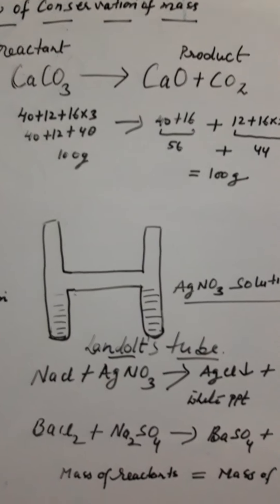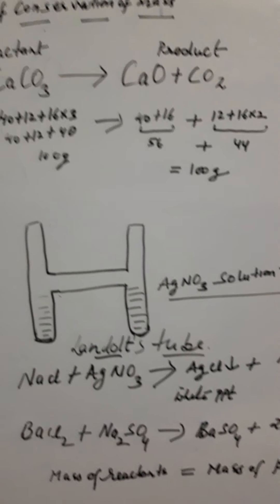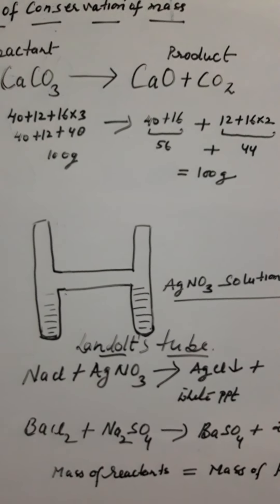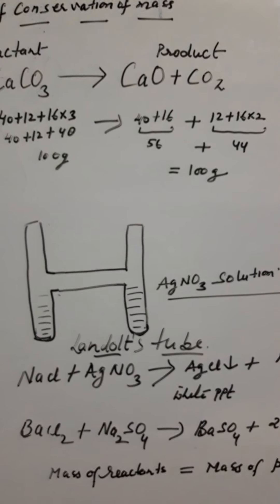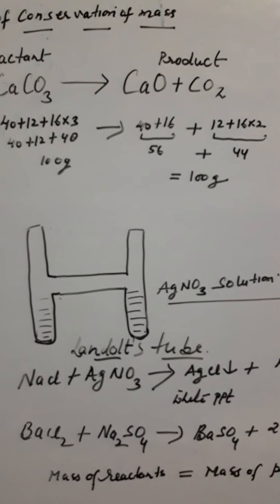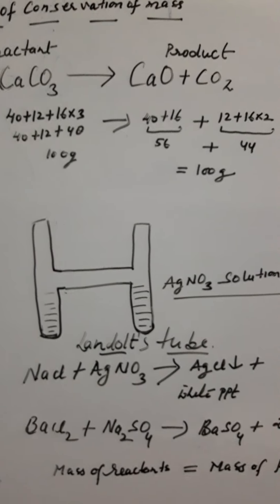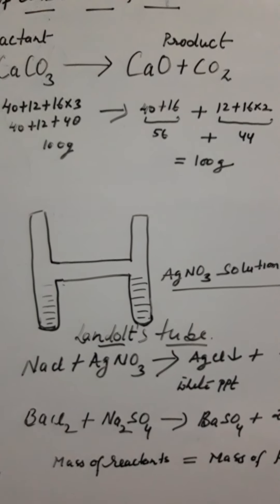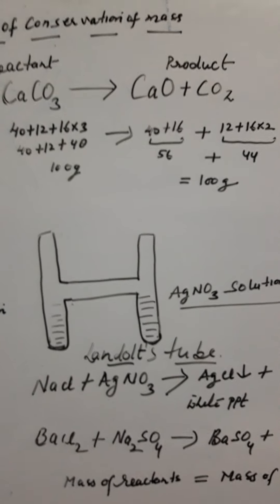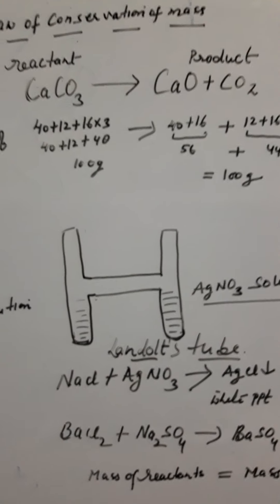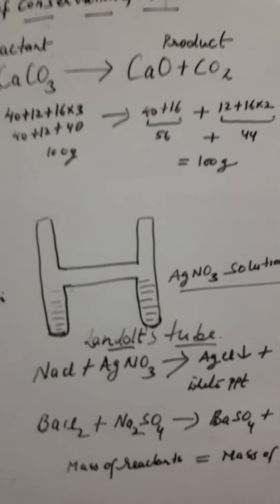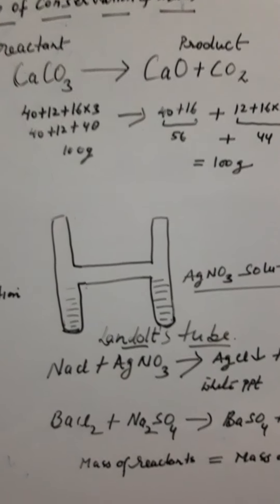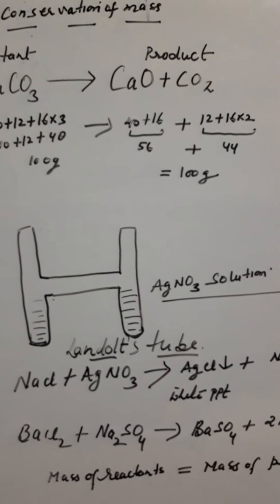it will form 56 grams of calcium oxide and 44 grams of carbon dioxide. If we add 56 plus 44, we get 100 grams. This verifies the law of conservation of mass: the mass of the reactants equals the mass of the products. To verify this experimentally,